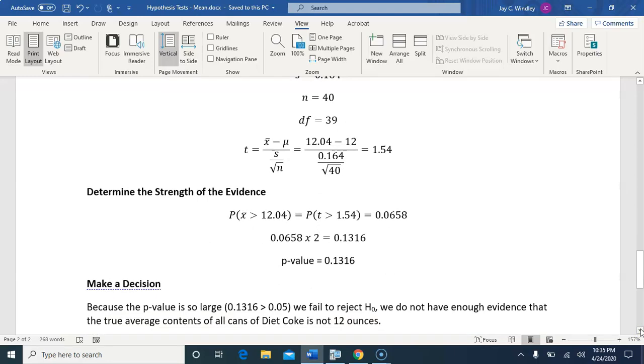Then make a decision based on that p-value, because the p-value is so large, 0.13 is greater than 0.05, we fail to reject H-naught. We do not have enough evidence that the true average contents of all cans of Diet Coke is not 12 ounces.